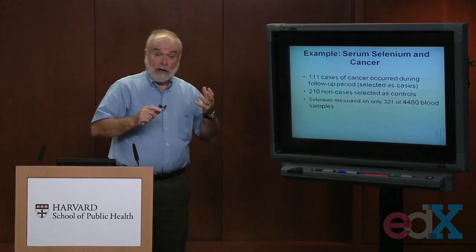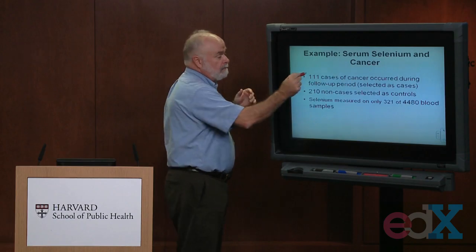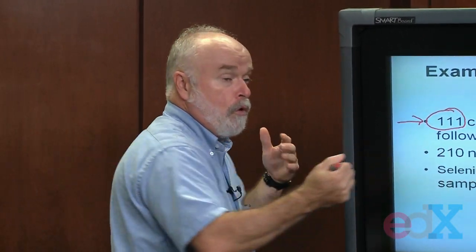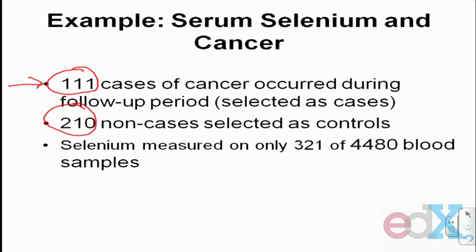Imagine you're Dr. Willett in 1983, given access to those freezers of blood. Dr. Willett had 4,480 individuals from the original Hypertension Detection and Follow-Up Program with stored blood specimens. Of those 4,480, 111 went on to be diagnosed with cancer during follow-up. He enrolled 210 non-cases into his study as controls, taking 210 other frozen blood specimens.